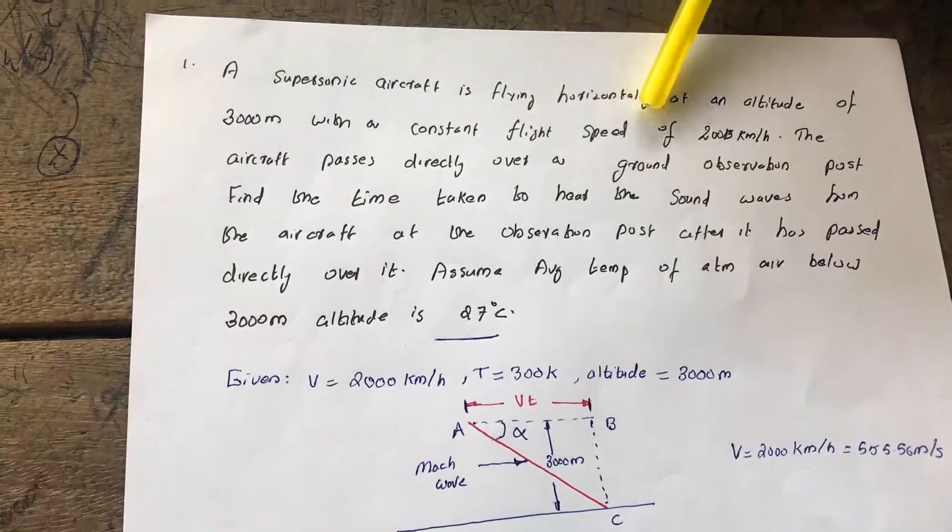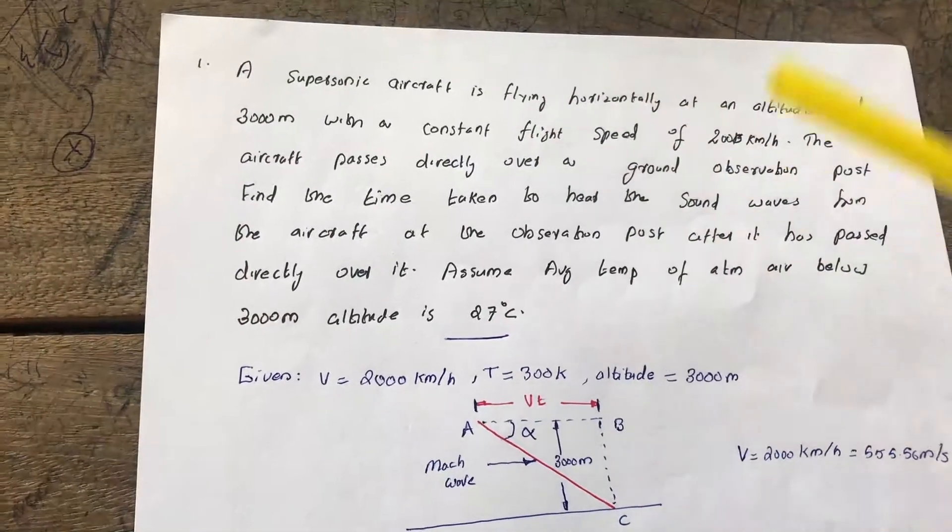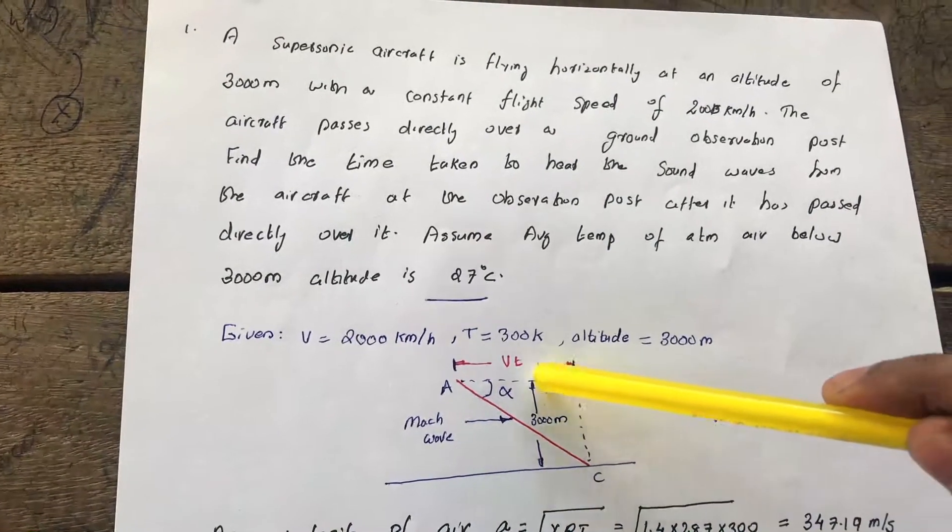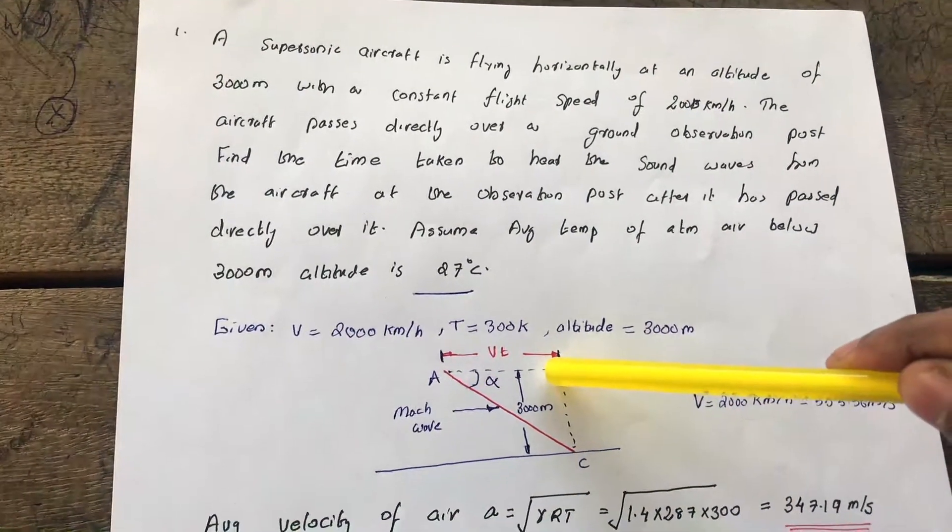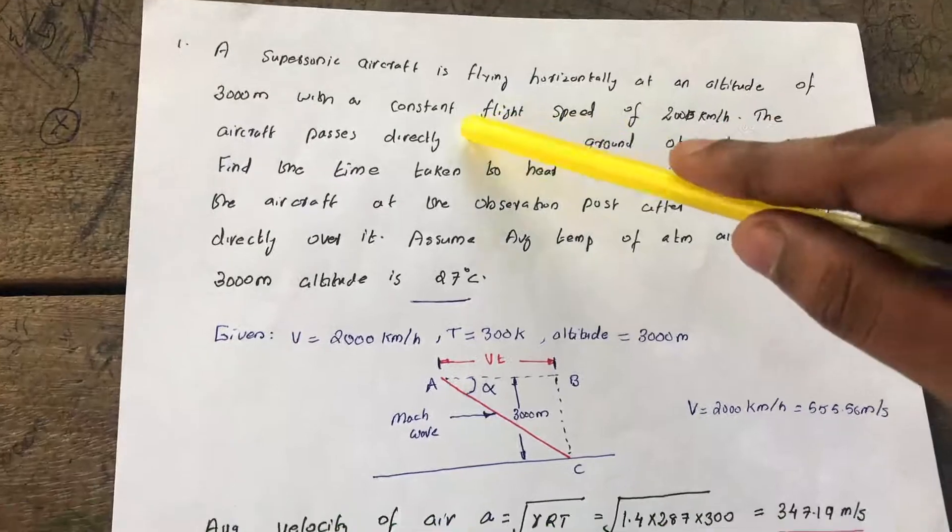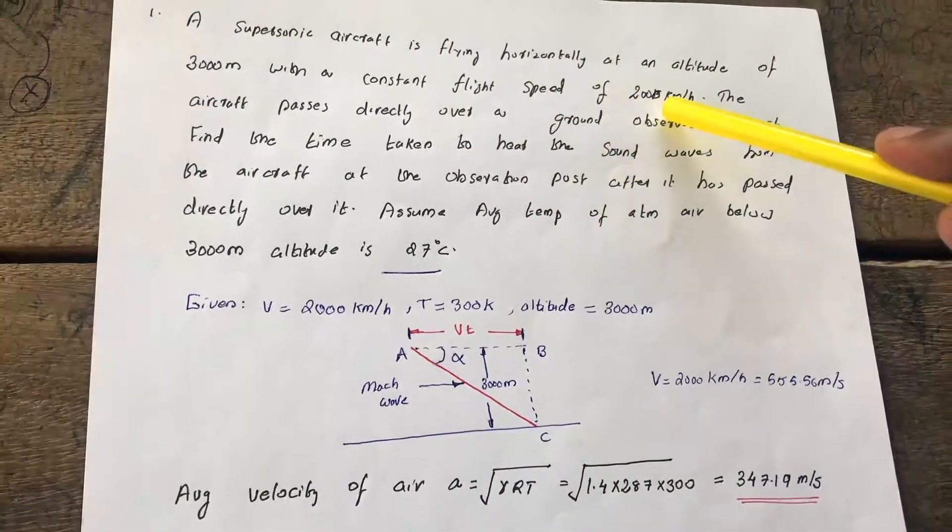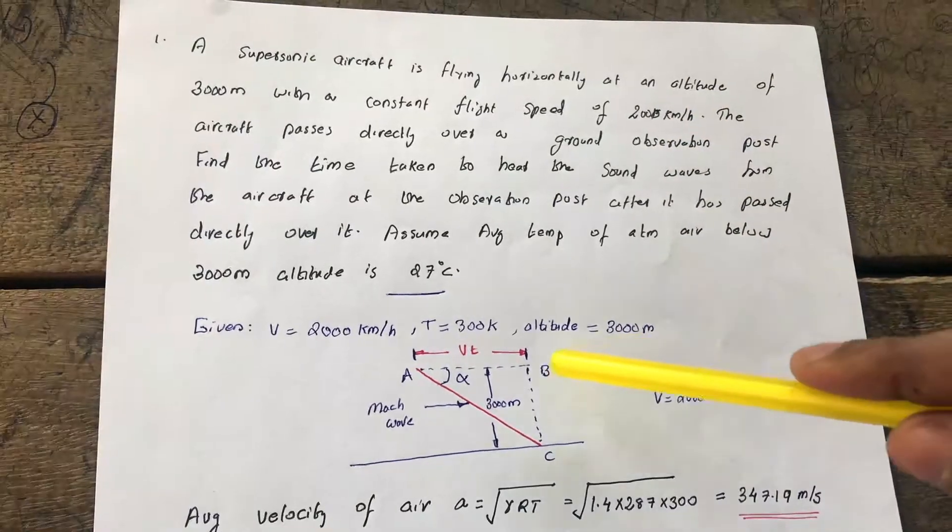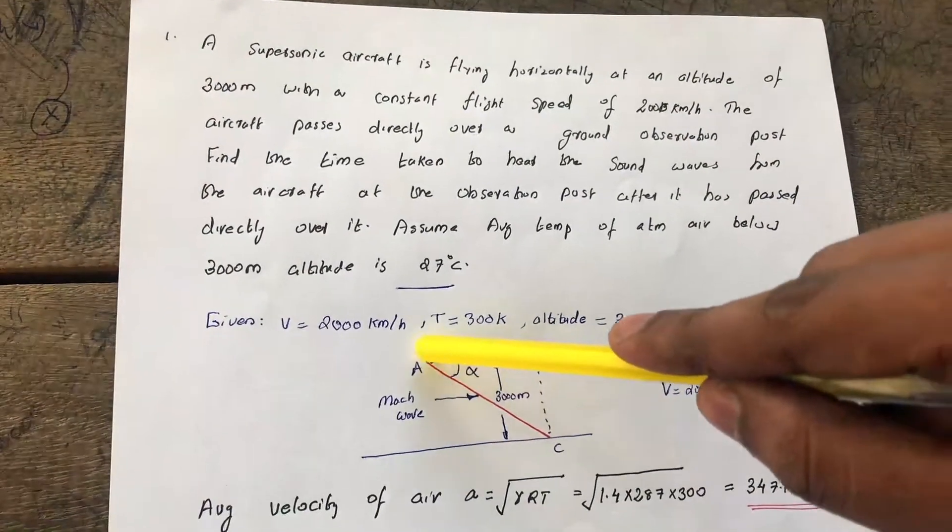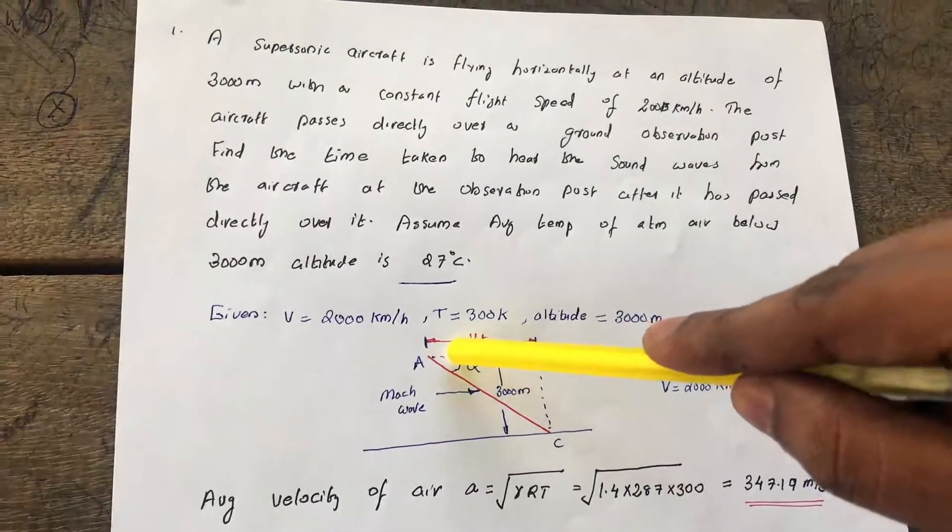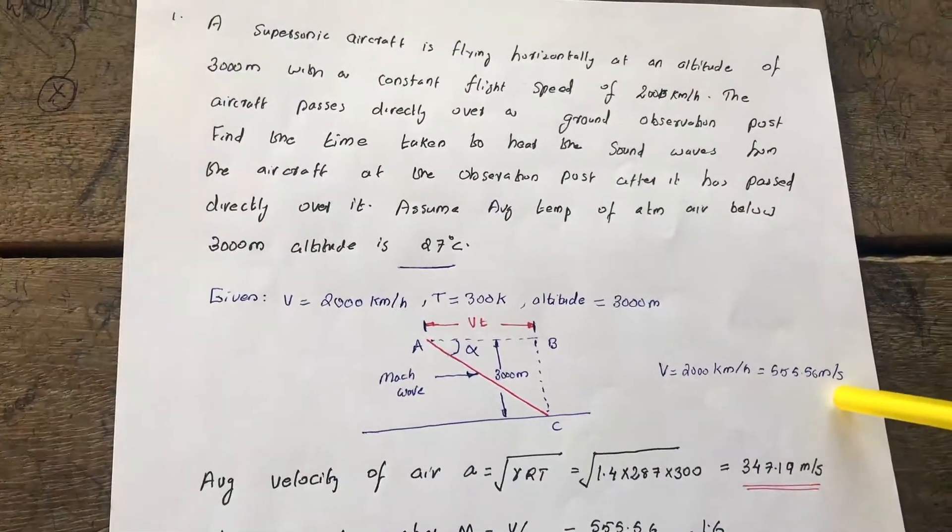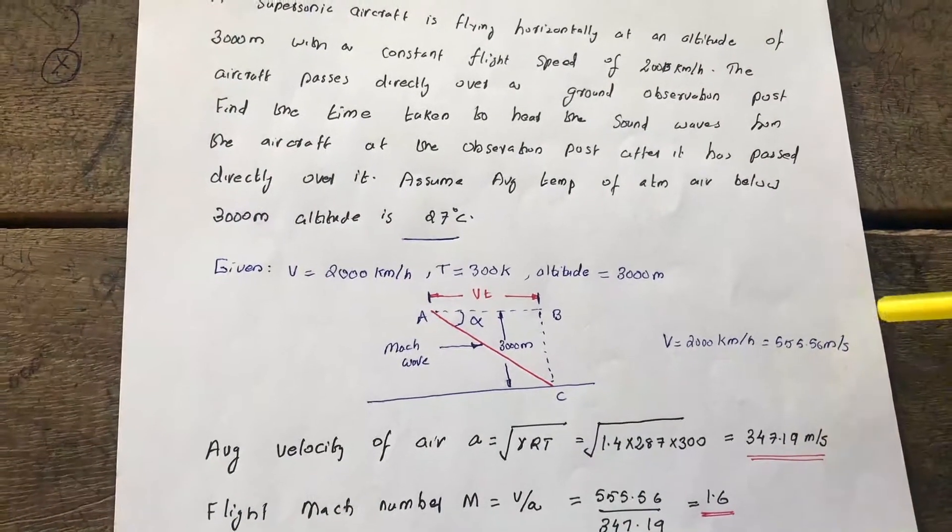A supersonic aircraft is flying at an altitude of 3000 meters. The aircraft is moving 3000 meters above the ground surface with a constant flight speed of 2000 kilometers per hour. The velocity at this position is 2000 kilometers per hour. We can convert it using the equations into meters per second. That is the standard procedure.